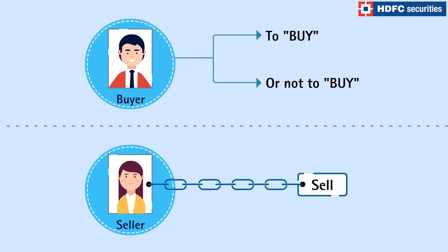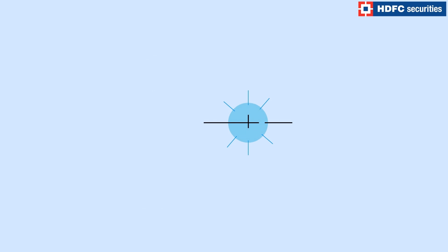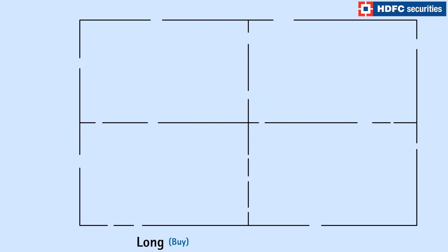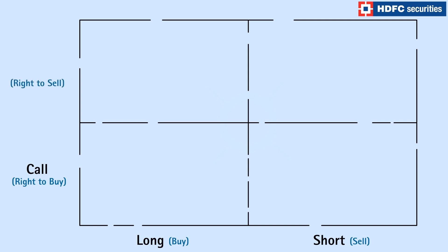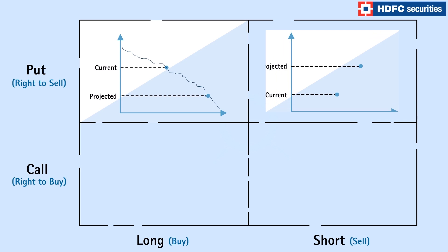Under an options contract, you can buy and sell the right to buy — the call option — or the right to sell — the put option — depending upon the market movement. This makes options a more complex and advanced derivative to trade in.